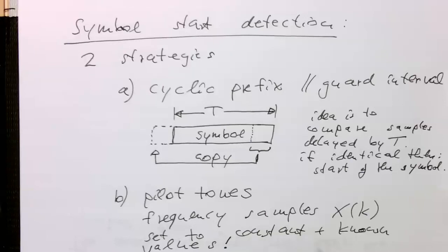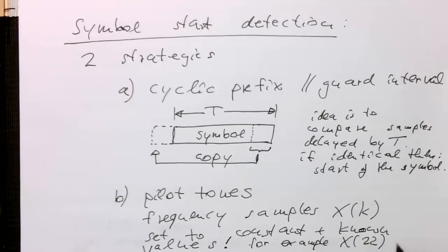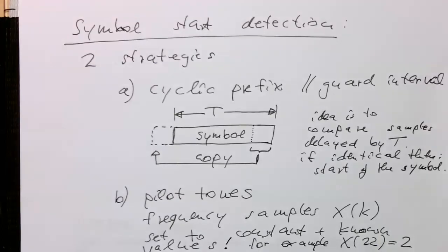Some of them, for example, X of 22, we set that to 2 or something like that. So then we know, when we're receiving the symbol, that this has to be exactly 2. And if this is complex or has a negative sign, we know that this cannot be the start of the symbol.